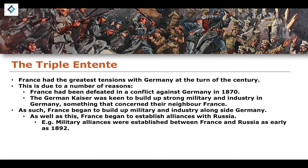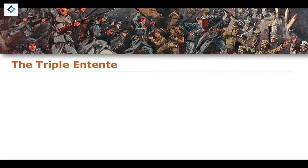Military alliances would be established between France and Russia as early as 1892 — a little bit before our major period of study. But we start to see, from 1892, a beginning of alliances taking shape as the two systems — the Triple Entente as well as the Central Powers — begin to form.